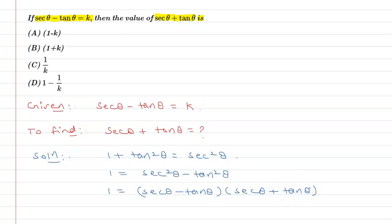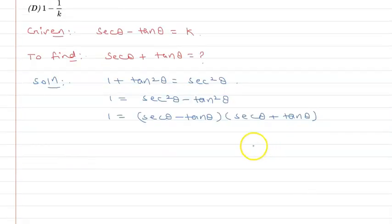So this a² minus b² can be written as (a minus b) times (a plus b).